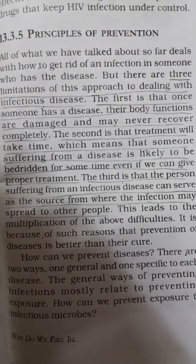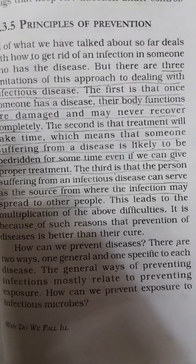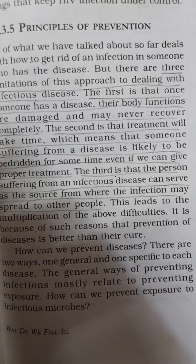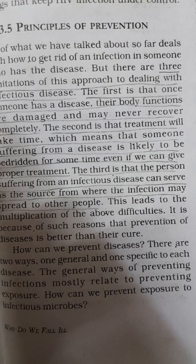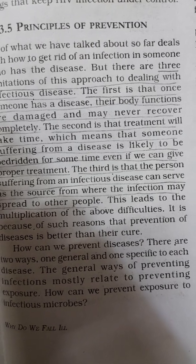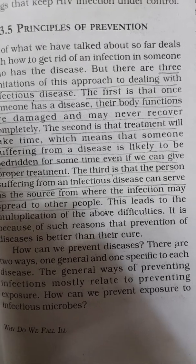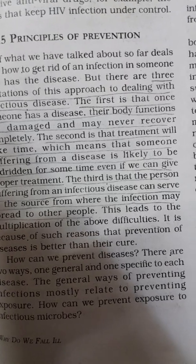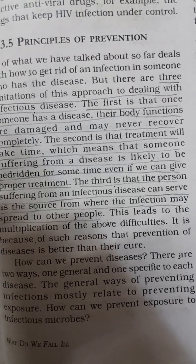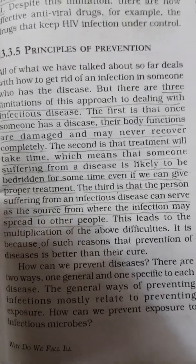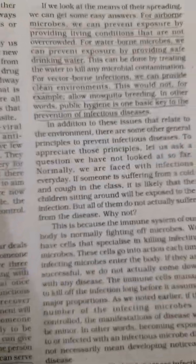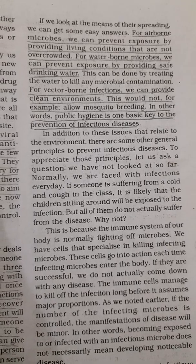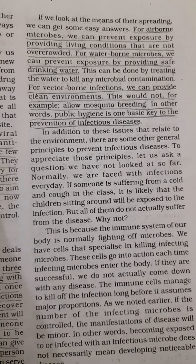How do we prevent diseases? There are two ways: one general way and one specific way for each disease. The general way of preventing infections mostly relates to preventing exposure. We should first check the pattern of the disease and know how it is spreading. The general way applies to all diseases, while the specific way is different for each disease.